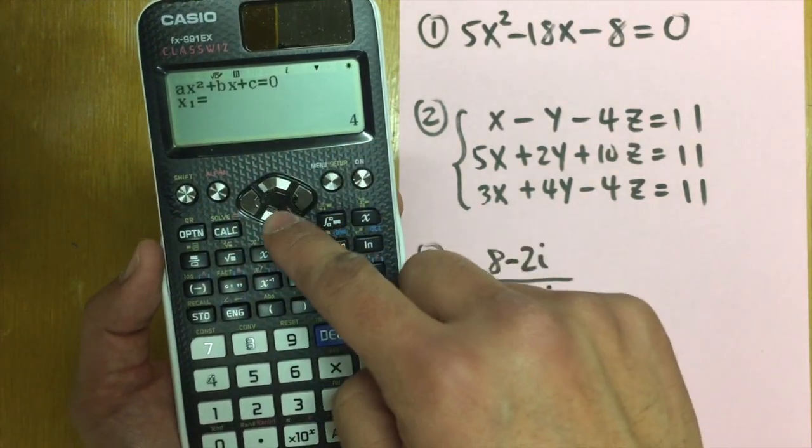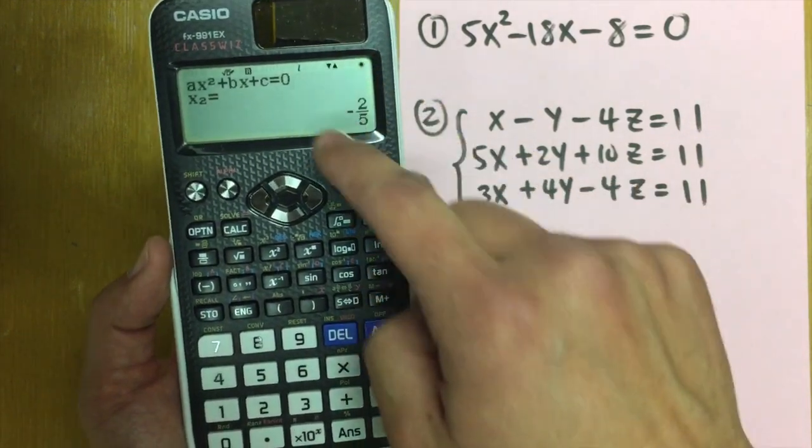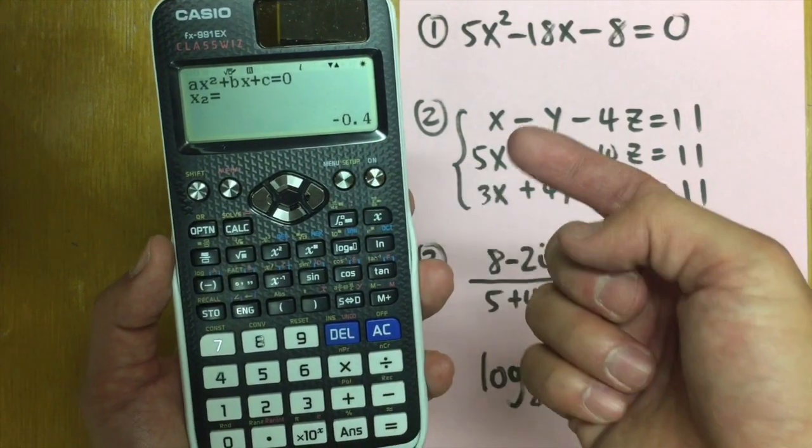First x value is four and press down. The second x value is negative two over five. Sometimes if you want to get a decimal, press S to D, negative point four. Alright?